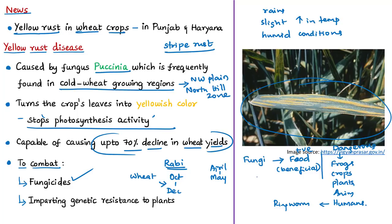In addition to fungicides, imparting genetic plant resistance to combat fungal infections is preferred as a cheap, effective, and eco-friendly way of fighting plant diseases. This information is important to keep in mind with respect to the yellow rust of wheat that has caused havoc in the states of Punjab and Haryana.